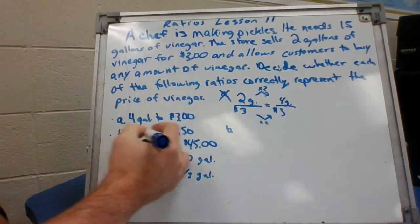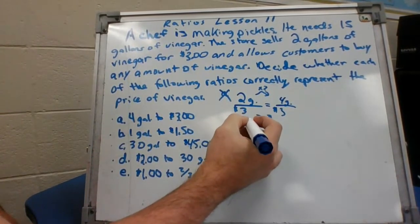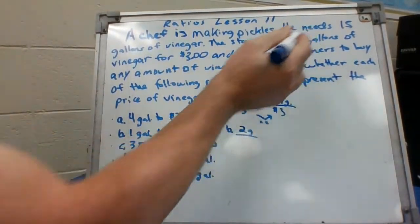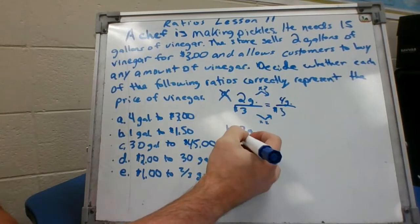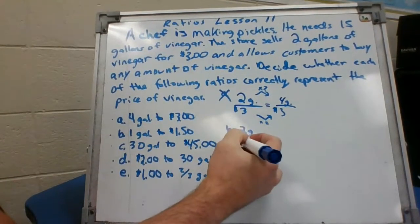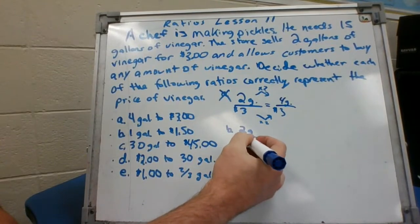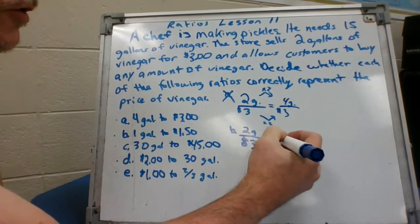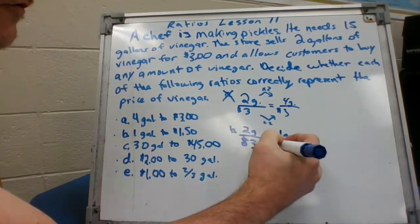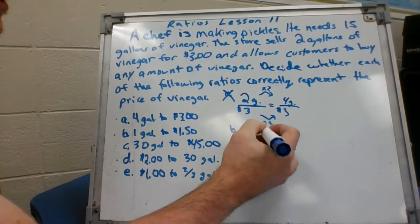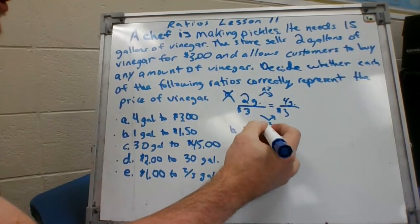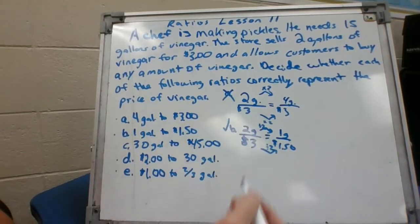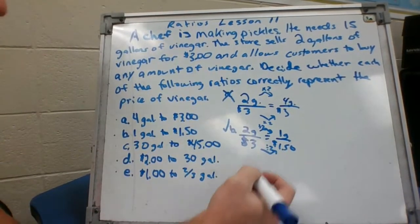One gallon for a dollar fifty. We got our given, two gallons for three dollars, that's what they give us in the beginning of the problem. We got to set it up, one gallon to a dollar fifty. To get from two to one you divide by two, and to get from three to one fifty divide by two, so that is a good one. B is a good one, go to C.